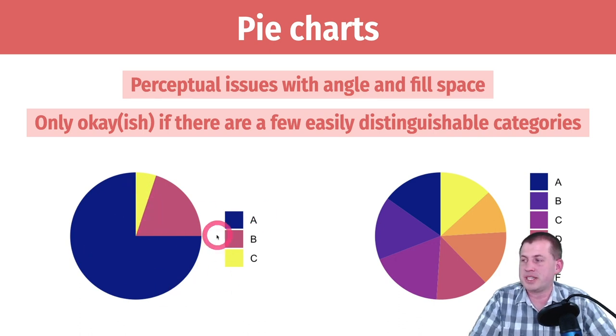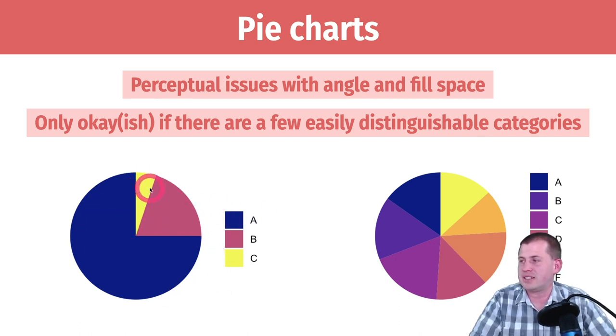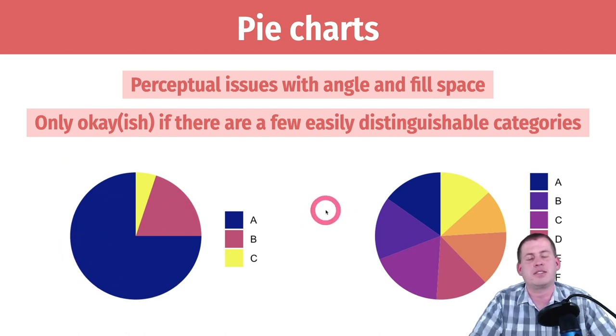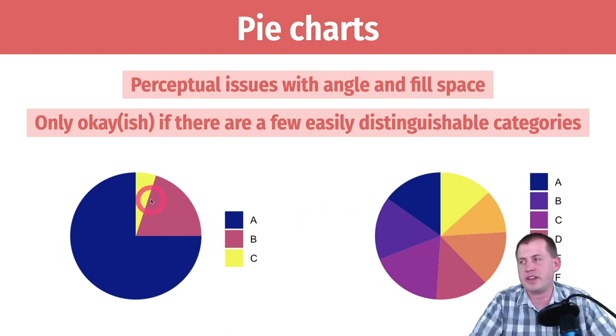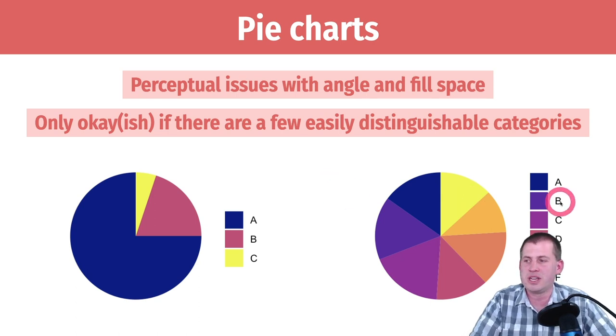It has three categories, you can easily find them. This slice is way smaller than that slice, which is way smaller than the giant slice — so you can tell there are big differences between the groups.